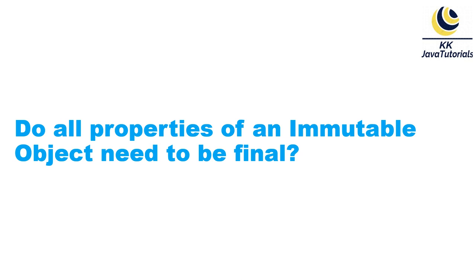Usually on various blogs and books, they tell us to make all the instance variables of an immutable class private and final. But here the question is: do all properties of an immutable object need to be final? The answer may be yes or no — it depends on the situation.